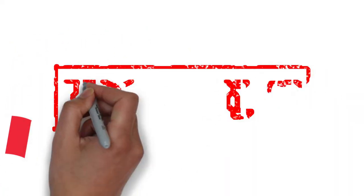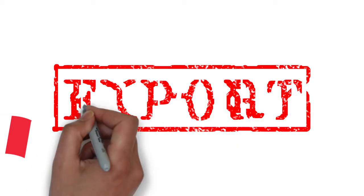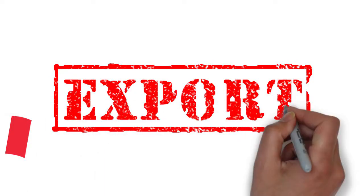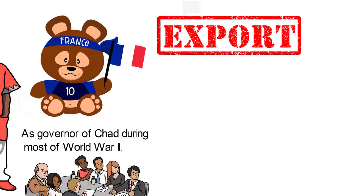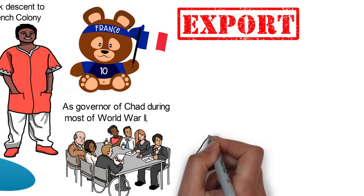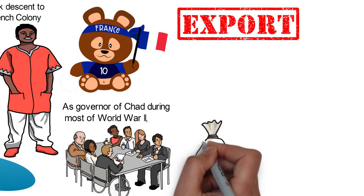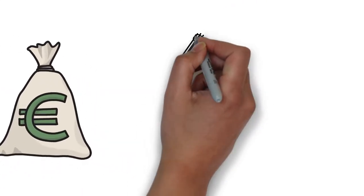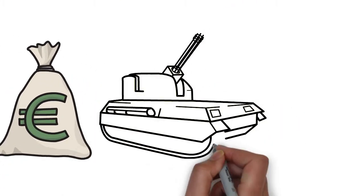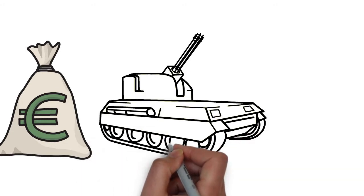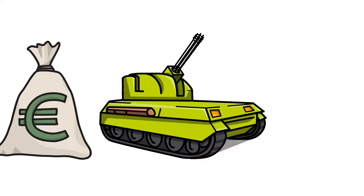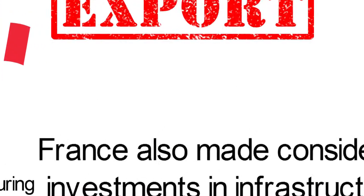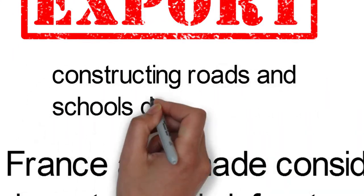During the Second World War, French investment began to prove more profitable, particularly in the export of gold and diamonds from the southern region. By 1946, when the war had ended, the southern region of Chad began to experience some prosperity. France allowed payments to plantation workers and pensions to those who served in the French military, and had also made considerable investments in infrastructure, constructing roads and schools during its control.